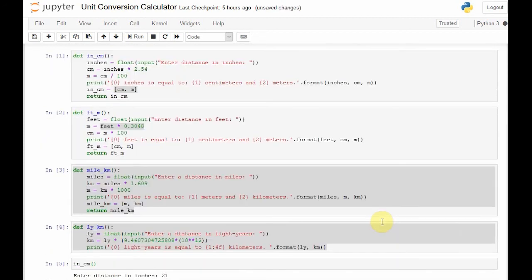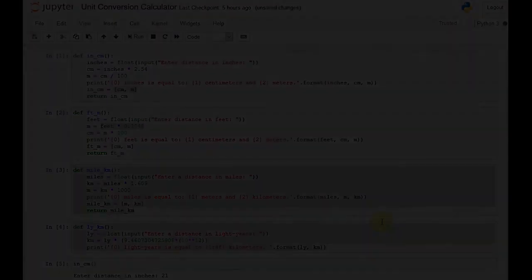In just a few lines of code, we have four independent functions that can convert between different measurements of distance. And we could add any others that we can imagine. Fathoms and parsecs and nautical miles and the like.